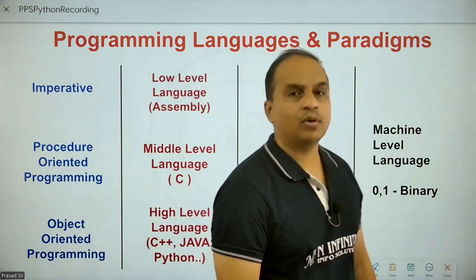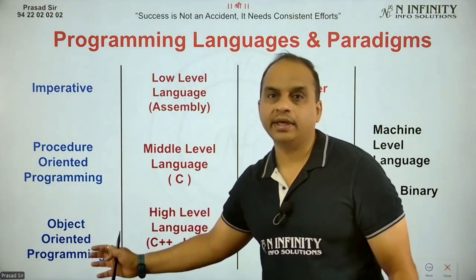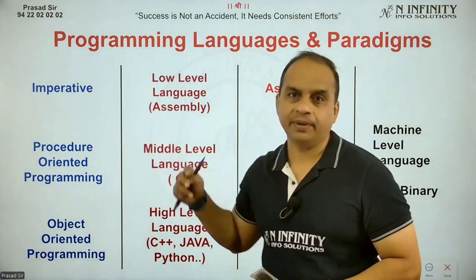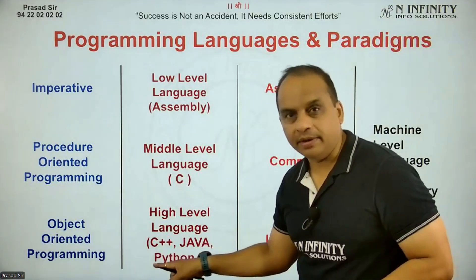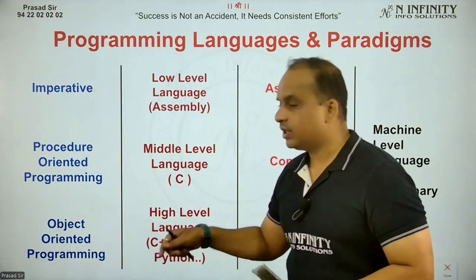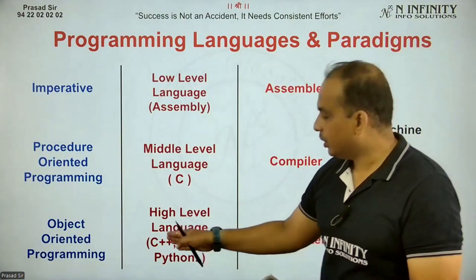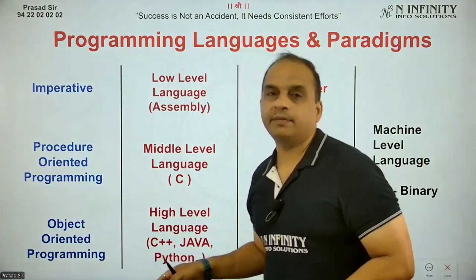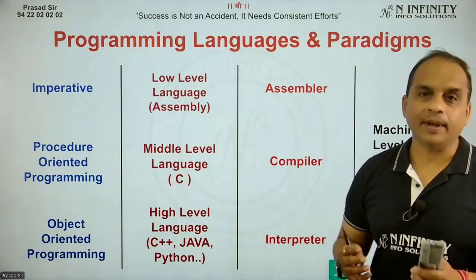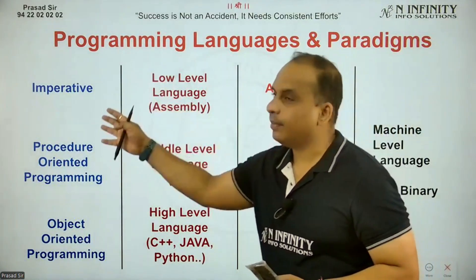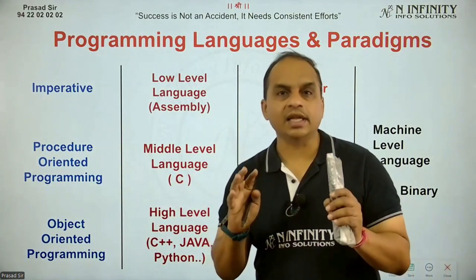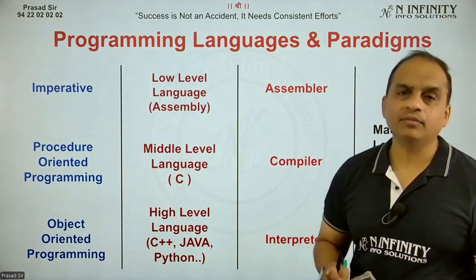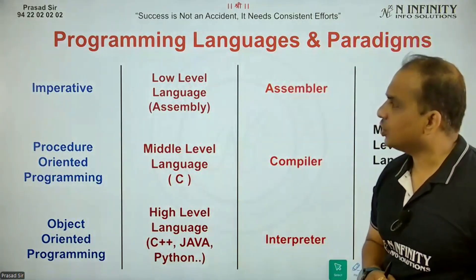These are the three main programming paradigms: imperative, procedure-oriented, and object-oriented. C supports both POP and imperative. C++ supports object-oriented but since it builds on C, it also supports POP and imperative. These are the main three styles of programming paradigm we will discuss, but there are many other programming paradigms as well, which we will briefly cover.